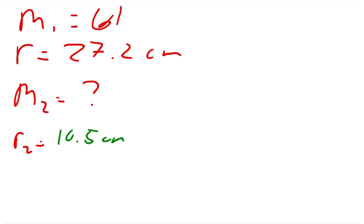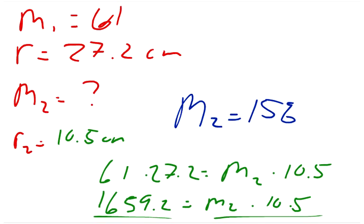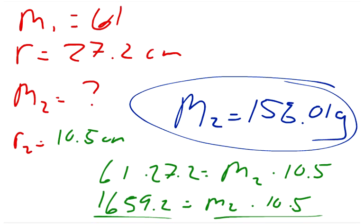So we can set this up now to say that 61 times 27.2 equals M2 times 10.5. So we simplify. We get 1659.2 equals M2 times 10.5. And we can divide both sides by 10.5 and we will get our answer for M2. So divide by 10.5 and you get that M2 equals 158.0 grams. So we're talking about grams, the mass in grams. And that's the answer.